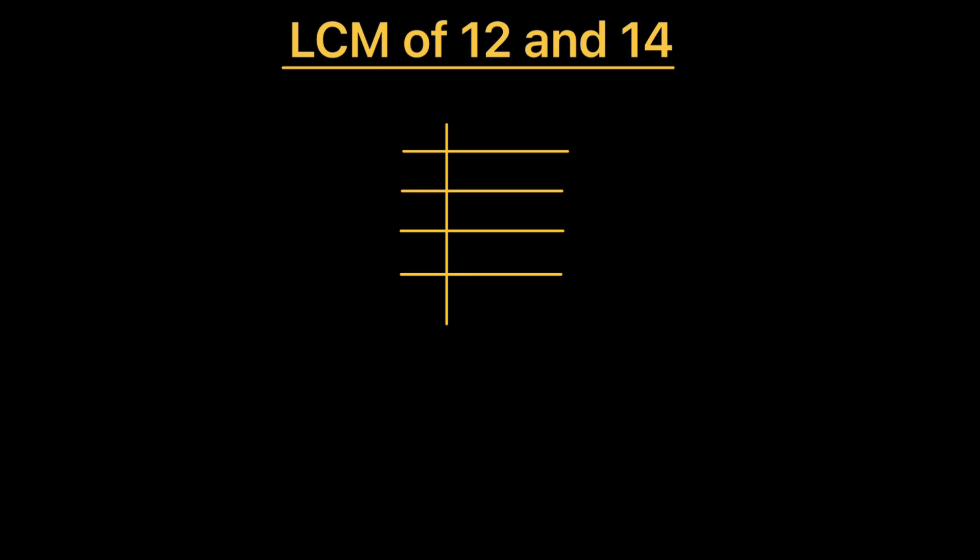For this, we are going to use the single ladder and write the two numbers together like this. We'll divide these numbers using prime numbers. Prime numbers are numbers which are divisible by number one and the number itself. So first few prime numbers are 2, 3, 5, 7, and so on. As both the numbers are even...